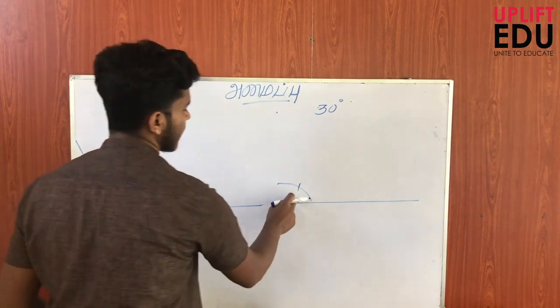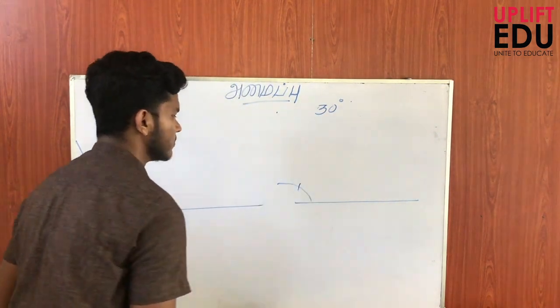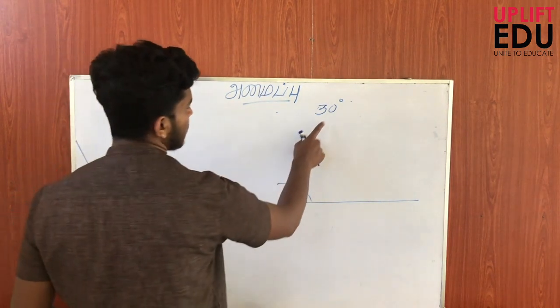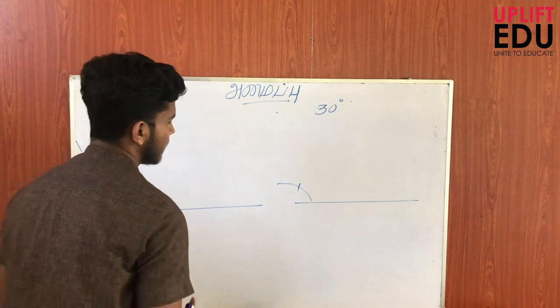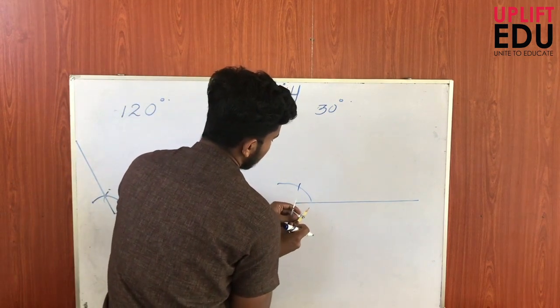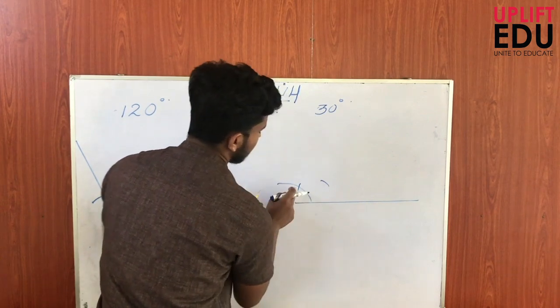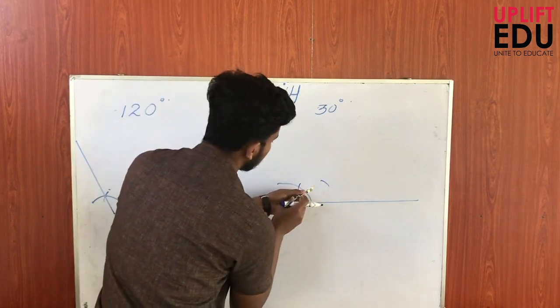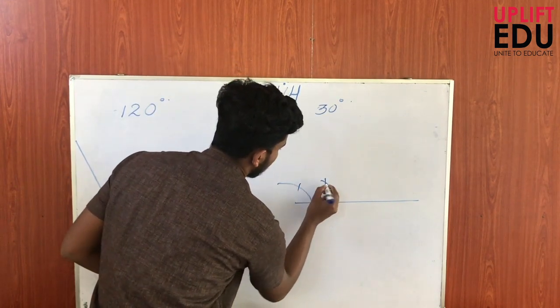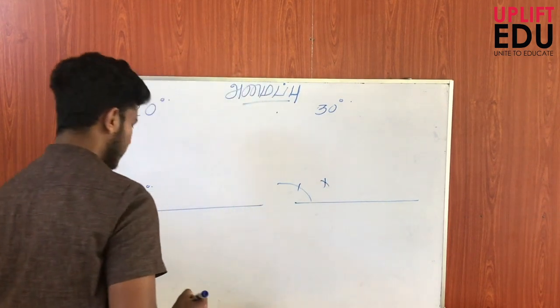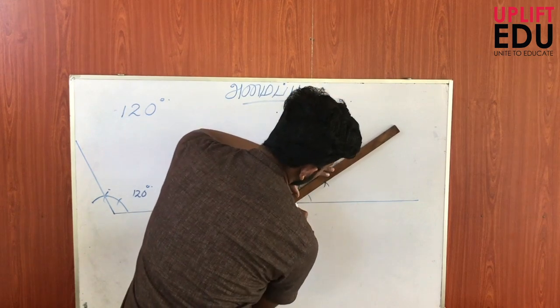The next topic is about angles. This is 30 degrees on the angle. So what does this mean?